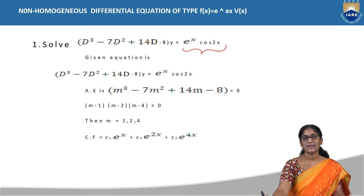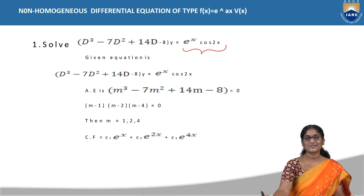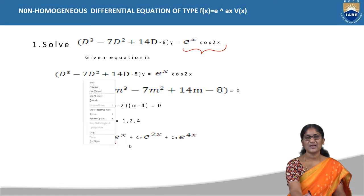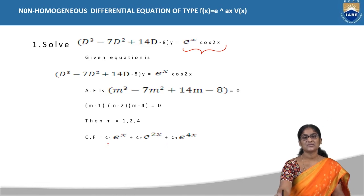The complementary function is obtained by framing the auxiliary equation. The auxiliary equation is m³ - 7m² + 14m - 8 = 0. Factorizing, this takes the form (m-1)(m-2)(m-4) = 0, so m takes three roots: 1, 2, and 4. The given equation is a third-order differential equation, so the solution contains three different constants. Therefore the complementary function is CF = c₁e^x + c₂e^(2x) + c₃e^(4x).